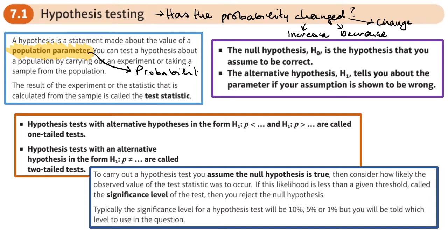Has the probability of a population changed? Can I tell that by looking at a sample? I need some sort of evidence to see whether the probability has changed, so I'm going to do some observations — look at a sample of people, observe what they're doing, and count them. Maybe out of 50 I notice that seven are buying these new sandwiches. This is what we call our test statistic — this is basically what we observe.